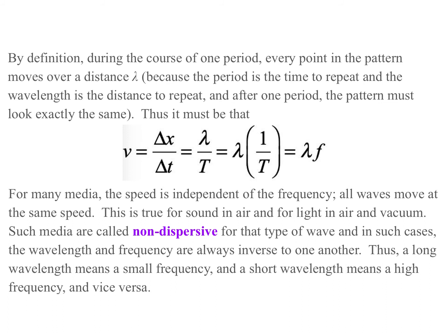Now, for many media, the speed is independent of the frequency. All waves move the same speed. Just because of whatever's going on in the mechanism that moves along. This is true for, for instance, sound in air, or for light in a vacuum. Such media are called non-dispersive because different frequencies don't spread out. They stay grouped together. And in such case, the wavelengths and frequencies are inverse to one another. A long wavelength means a small frequency, and a short wavelength means a high frequency, and vice versa.